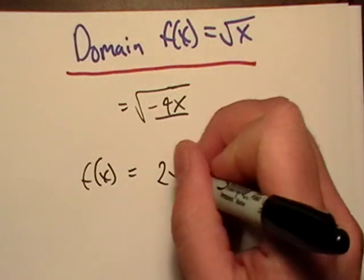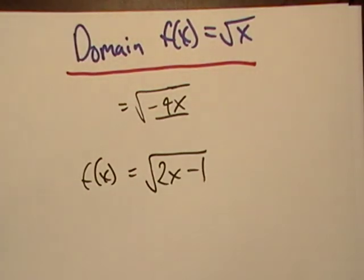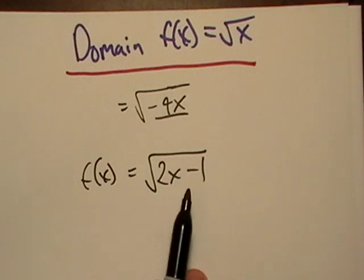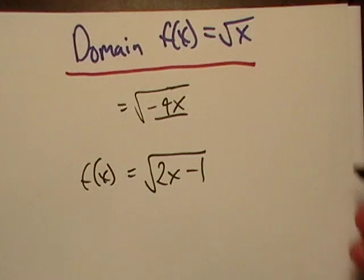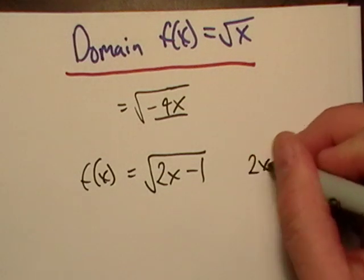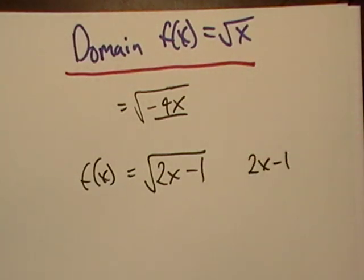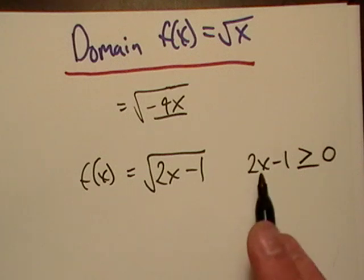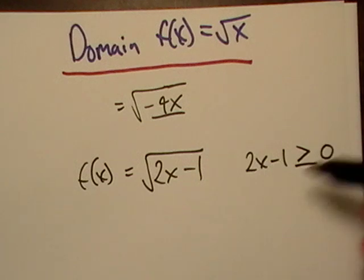I got f of x, and that's going to be equal to √(2x-1). So what we just talked about is that 2x-1 has to be greater than zero. So all we'll do is go ahead and solve for x and see if we can't produce a set of x values that'll make this legit.